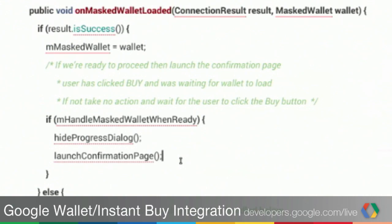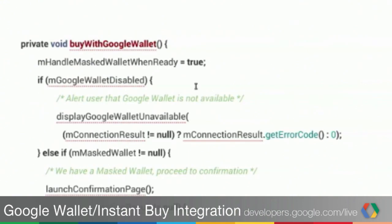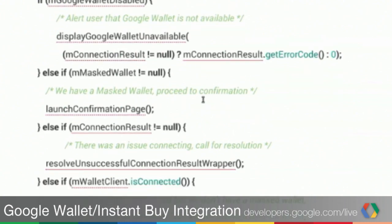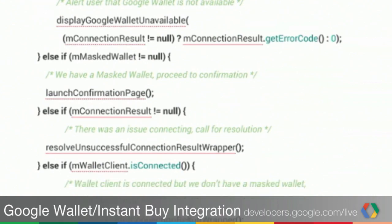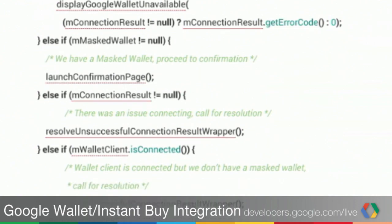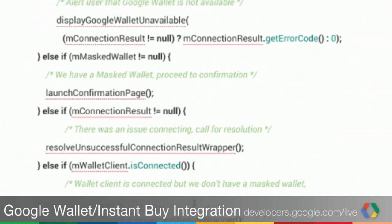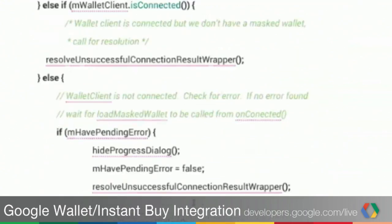You wait for the user to click the button and then resolve the connection result. As soon as I hit Buy, we have this convenient method — Buy with Google Wallet. We'll check to make sure Wallet is not disabled. If they have the Wallet previously loaded, we go right into the confirmation page. If there's any outstanding issue — we don't have a valid connection result, or Wallet is connected but we don't have a Masked Wallet — we drop back into a shared method to resolve unsuccessful connections. That falls back into the Masked Wallet loaded method so that as soon as we get a valid result, they're immediately sent to confirmation.